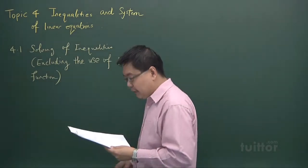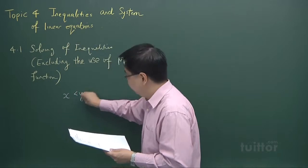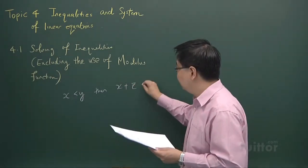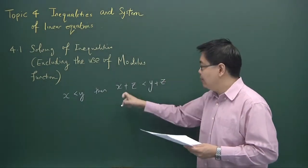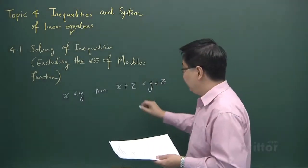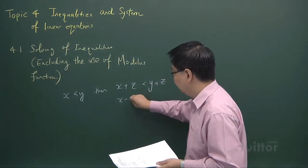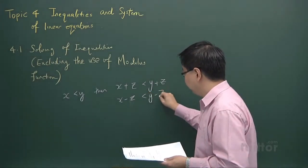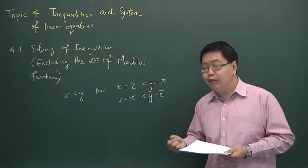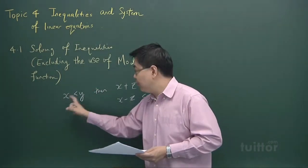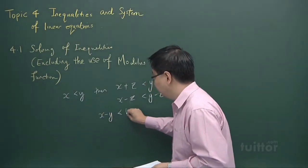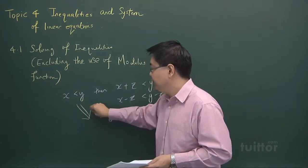In the first property of inequality, it says that if x is less than y, then x plus z will be smaller than y plus z. That means you can add both sides of an inequality by the same number and it will not affect the inequality sign. Likewise, if you subtract z from both sides, the inequality sign will also not change. This is very useful — whenever you want to make the right-hand side 0, you can subtract both sides by y, giving x minus y less than 0.